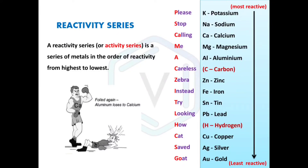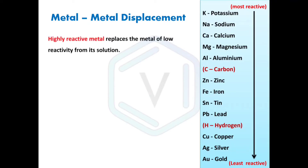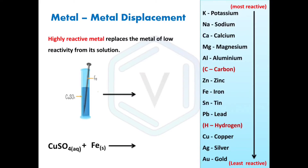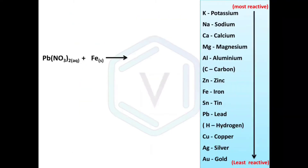In a metal-metal displacement reaction, a highly reactive metal replaces a metal of lower reactivity from its solution. For example, an iron nail placed in an aqueous solution of copper sulfate: iron is placed higher in the reactivity series than copper, so iron is more reactive. Therefore, iron replaces copper from copper sulfate solution, giving ferrous sulfate plus copper. This reaction is accompanied by a color change from blue to brown due to the displacement of copper by iron.